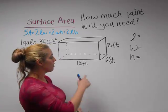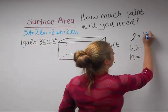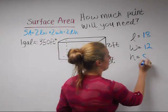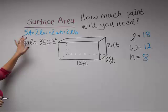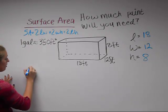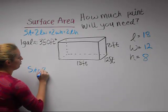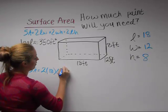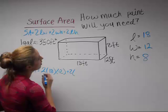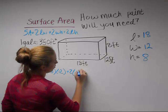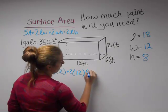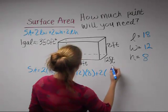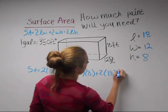Let's say 18 by 12 with 8-foot ceilings. That means our length is 18, our width is 12, and our height is 8. We have our surface area formula, so we're going to find the surface area of our room, which is 2 times 18 times 8, plus 2 times 12 times 8, plus 2 times 18 times 12.